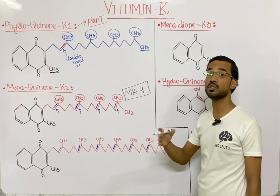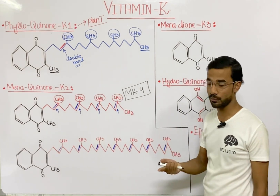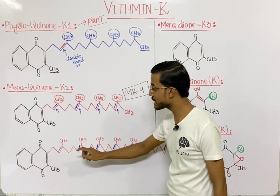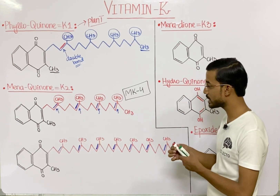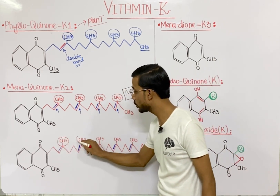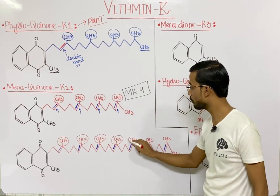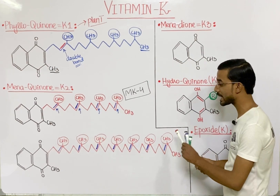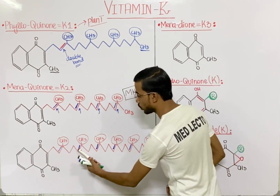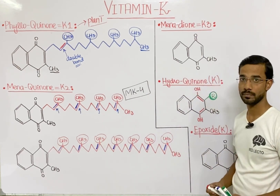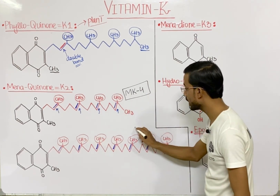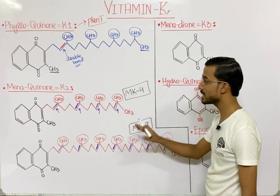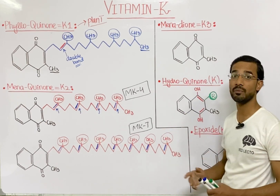Similarly, menaquinone — vitamin K2 — also exists in another form. The ring structure will be similar, but the side chain will be different. In that situation you will see seven groups in the side chain — 1, 2, 3, 4, 5, 6, and 7 — and at each point you will see the presence of a double bond, giving seven double bonds. That is called menaquinone-7. These are the different forms of menaquinone or vitamin K2.